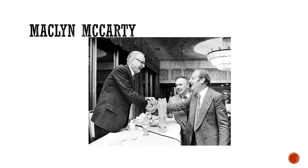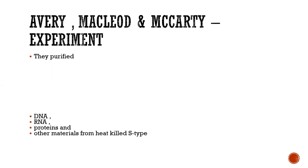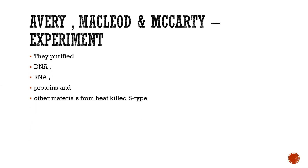Avery, MacLeod and McCarty repeated Griffith's fourth step: they had a mixture of heat-killed smooth variety and living non-capsulated avirulent rough variety. They separated different components from the heat-killed smooth variety. There were carbohydrates, lipids, proteins, RNA, and DNA — all separated from the heat-killed S-type.